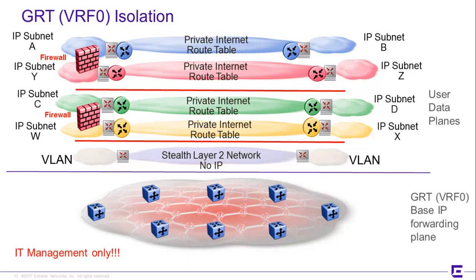This diagram shows an example of two separate tenants set up in the environment with absolutely no connectivity to one another, each with private internet environments, and some stealth L2 networks for an intelligent smart building — perhaps tenants or a government agency. None of them have any access or connectivity to the GRT whatsoever. The GRT is a plane unto itself, dedicated just for the management of the fabric.